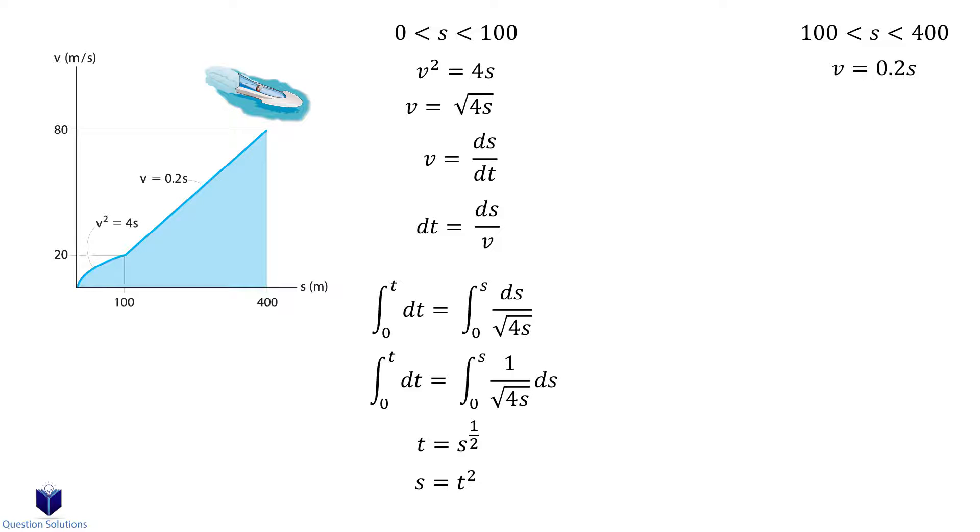To take the integral of the next segment we need to find its lower bounds. Let's substitute 100 meters and see how long it takes for the boat to cover that distance. Substituting gives us 10 seconds. In other words it took the boat 10 seconds for it to travel a distance of 100 meters.